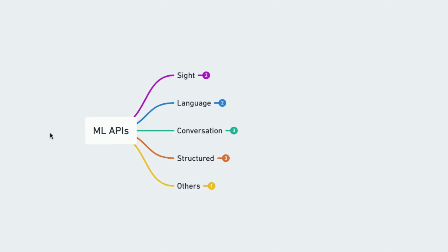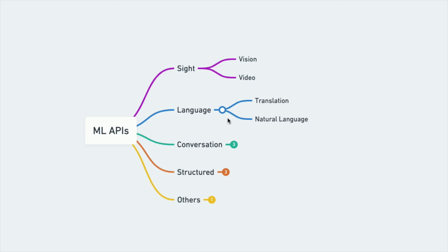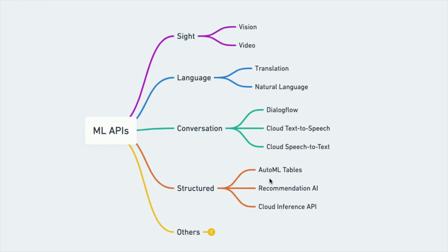In general, the ML APIs can be divided into four main broad categories: sight, language, conversation, and structured data. These main categories even have subcategories. For example, sight has vision and video intelligence. Language has translation and natural language API. Conversation has Dialogflow, speech-to-text, and text-to-speech. Structured data has AutoML Tables, Recommendation AI, and Cloud Inference API. There are other categories as well, but I'll discuss them in later videos.